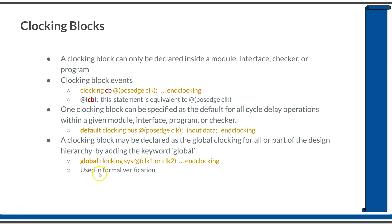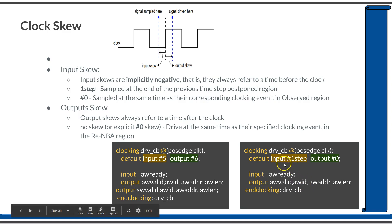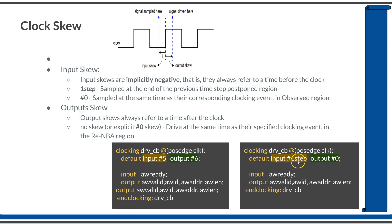To summarize, you will see clocking blocks widely used in quality testbenches. They will quite often be defined in an interface, which you are going to see in the next lecture. By default, in most cases you will be defining the clocking skews as input '#1step' and output '#0'.